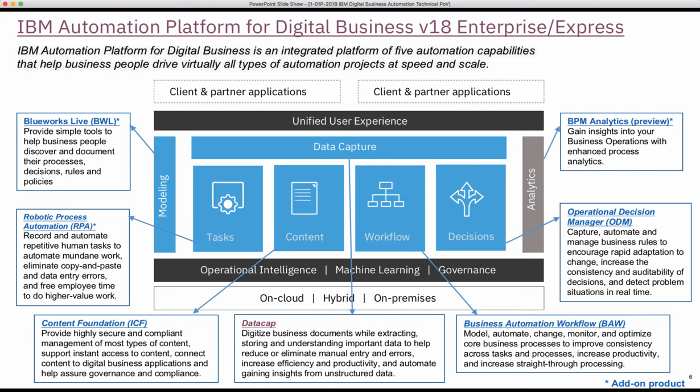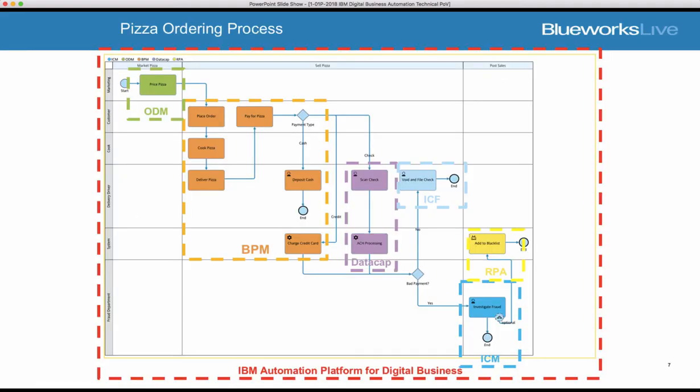Now I'm going to drill in a little bit architecturally and show you how these products fit together to extend our pizza ordering process to a broader scenario. As you remember in my pizza ordering process, I showed you how to build the process that allowed customers to pay for pizza with cash or with a credit card, as you see here.